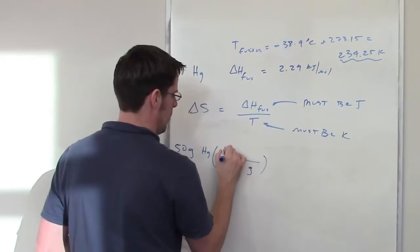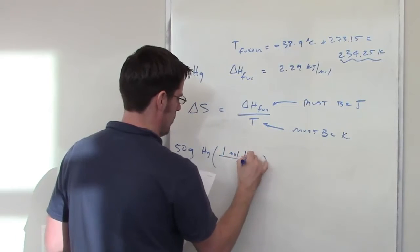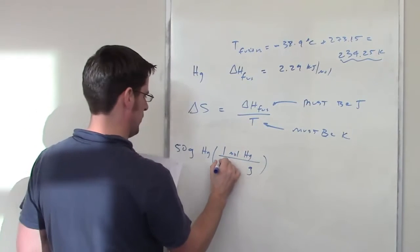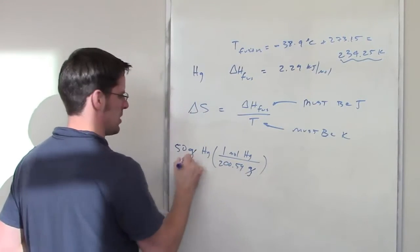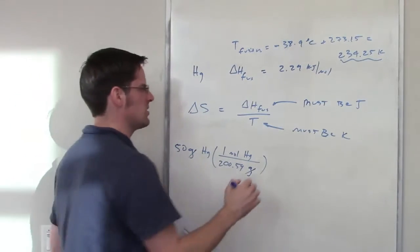I know from the periodic table that one mole of mercury weighs 200.59 grams, so the grams will cancel each other out. Now I'm at moles. Am I getting closer? Yeah, I think so.